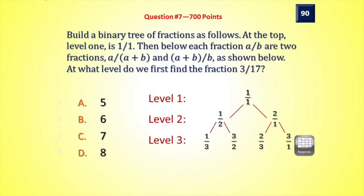We're going to build a binary tree of fractions as follows. At the top level, we have 1 over 1. Then below each fraction A over B are two fractions: A over A plus B, and A plus B over B, as shown below through the first three levels calculated there.